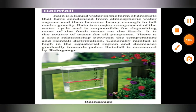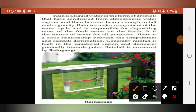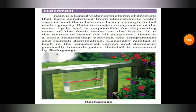Next, coming to rainfall. Rainfall is very important for us. Rain is liquid water in the form of droplets that have condensed from atmospheric water vapor and become heavy enough to fall under gravity. Rain is a major component of the water cycle and is responsible for depositing most of the fresh water on earth. It is the source of water for all purposes.